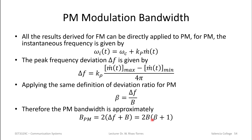For PM bandwidth, the same Carson's rule results from FM apply directly. We look at the instantaneous frequency, define a peak frequency deviation, but it's in terms of the derivative of m(t) — you look at the maximum and minimum of the derivative. The peak frequency deviation for PM is k_p divided by 4π times that delta range. Carson's rule applies again, and we can define the same deviation ratio β.